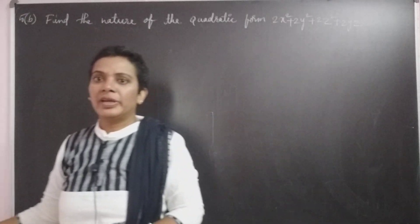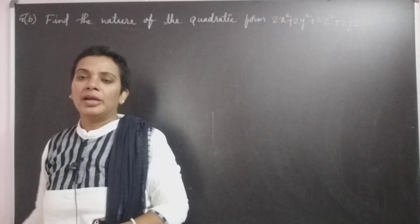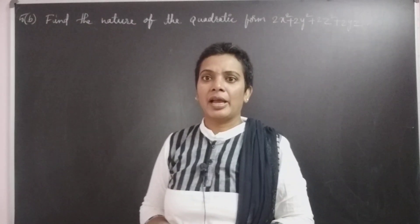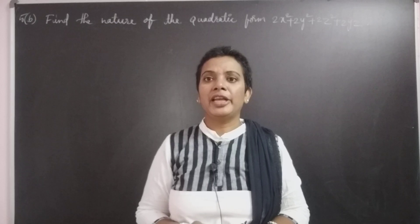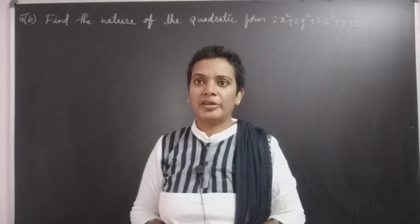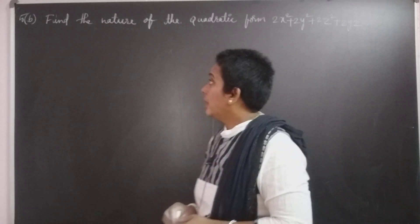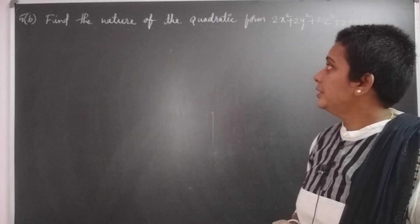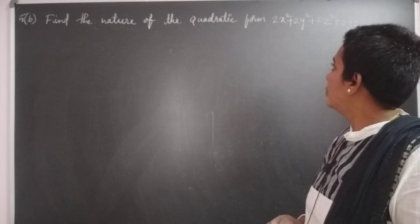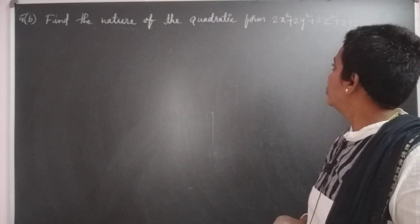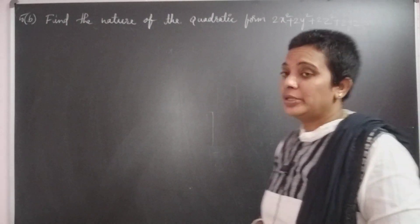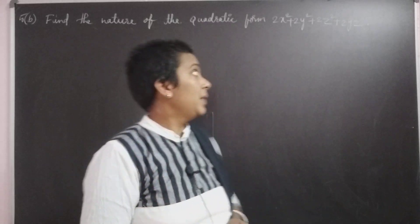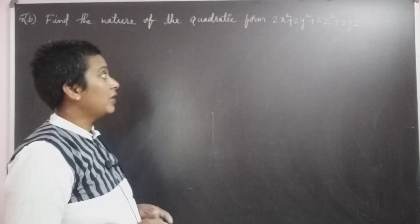Good morning. Now I would like to discuss about the nature of the quadratic form. I am taking one problem: find the nature of the quadratic form 2x squared plus 2y squared plus 2z squared plus 2yz.